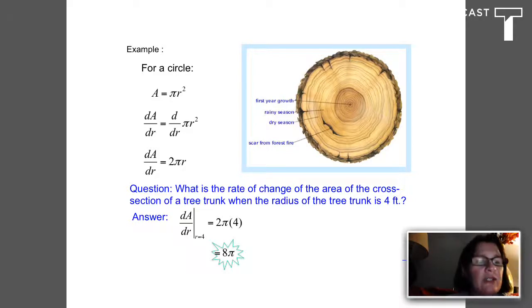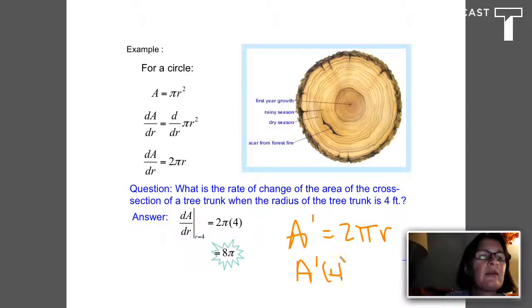Notice this notation. Instead of writing dA/dr, I could have written A prime equals 2 pi r. So I could say A prime of 4. That means the A prime function with 4 plugged in is 2 pi times 4.